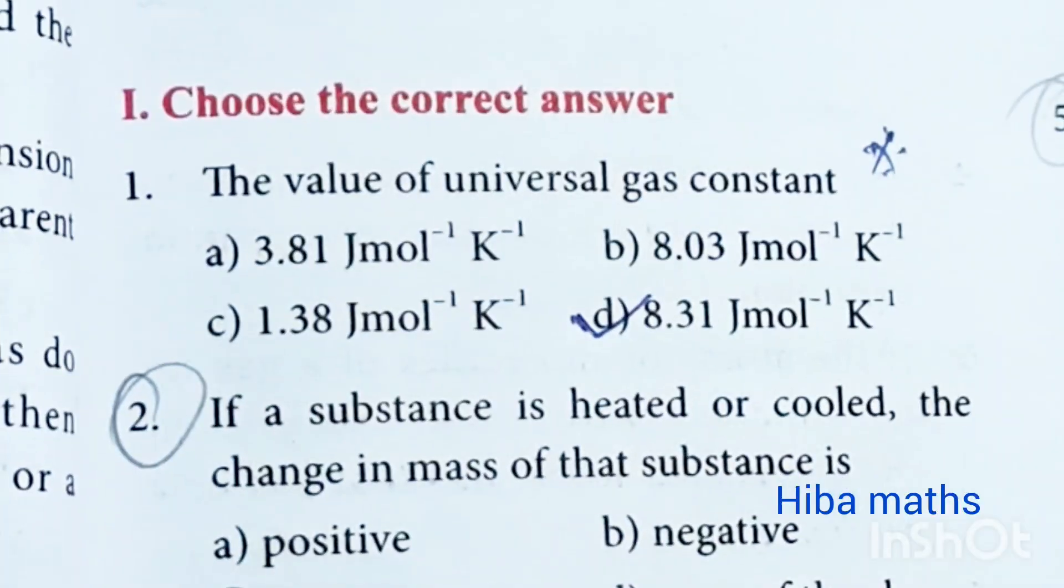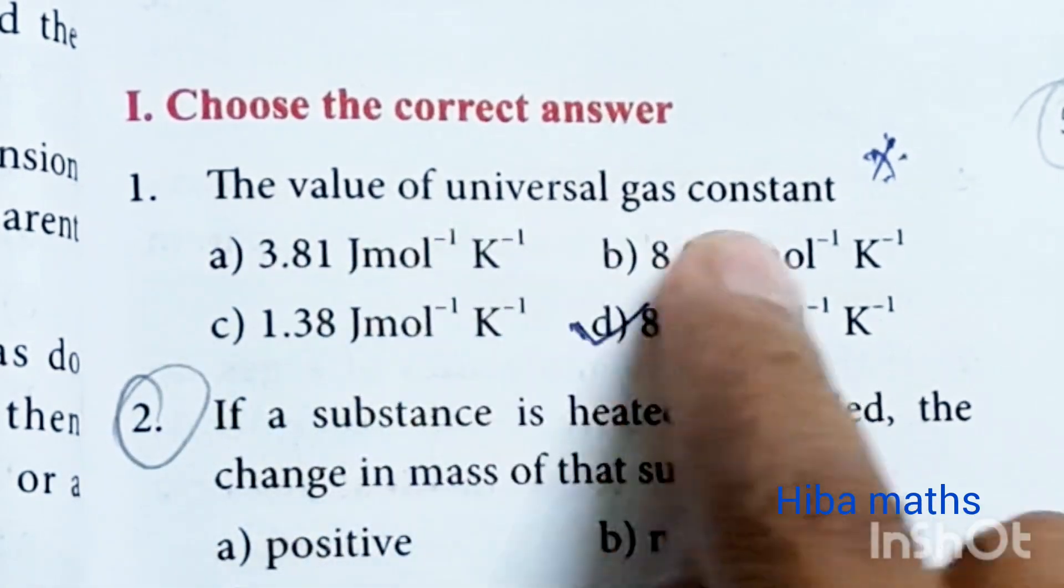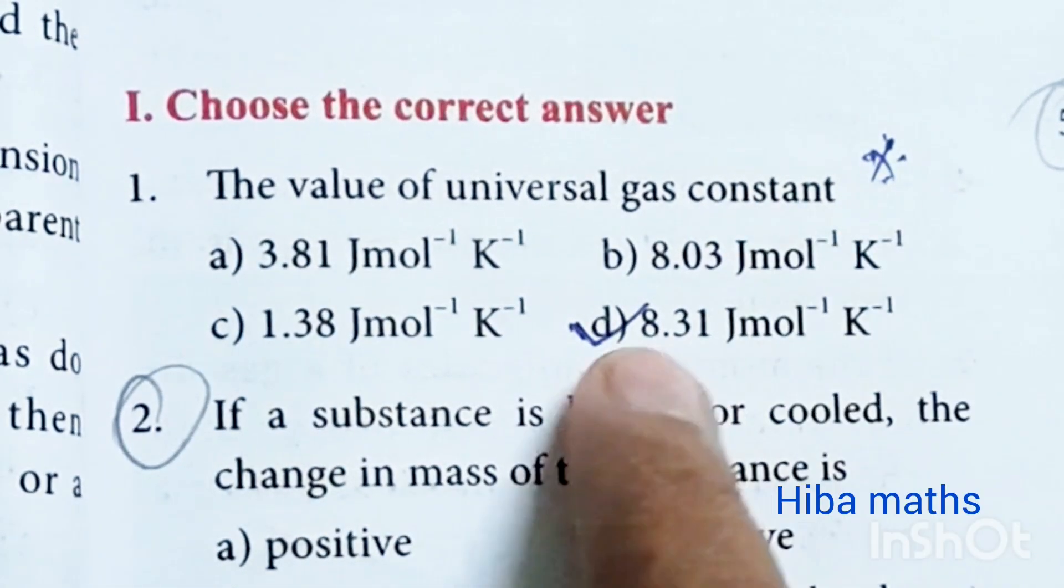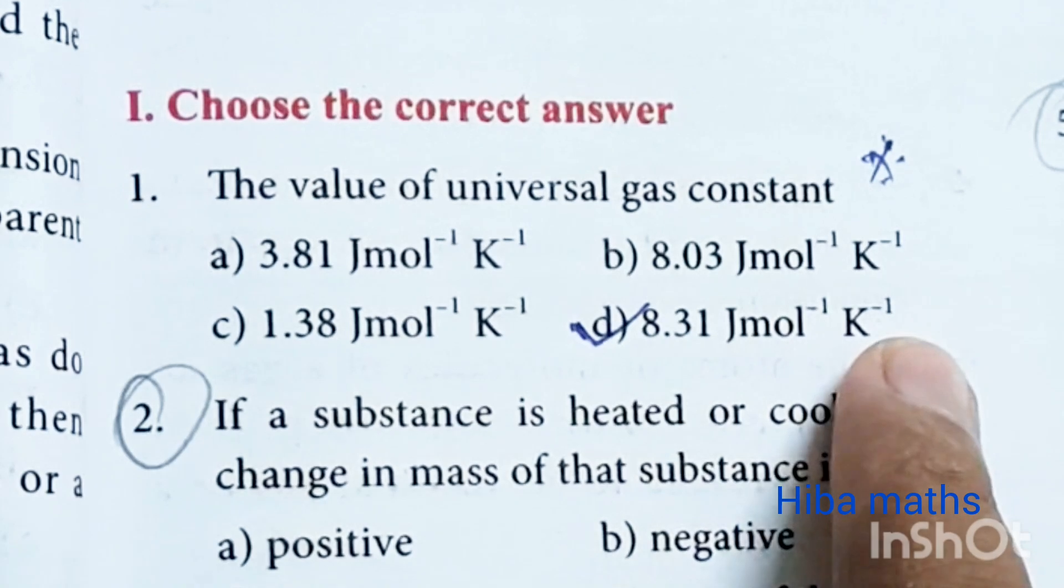So first, choose the correct answer. The value of universal gas constant: 8.31 joule per mole per Kelvin.